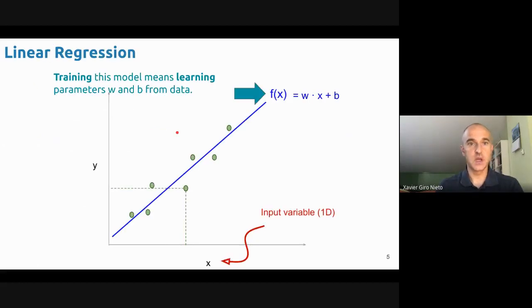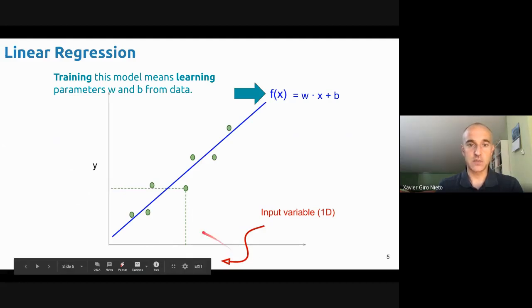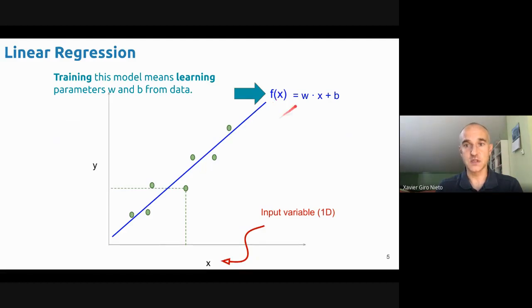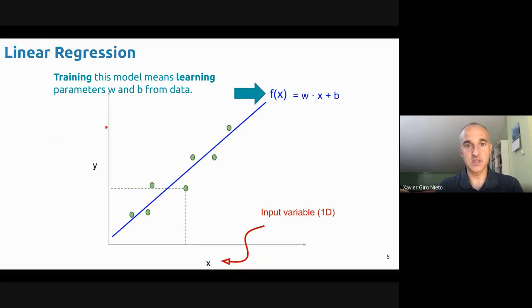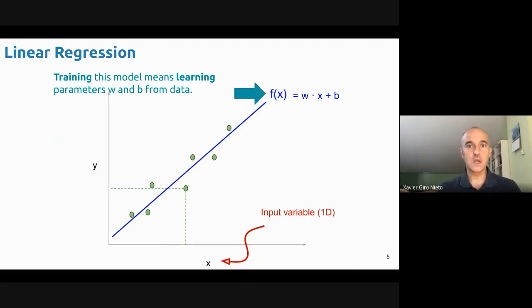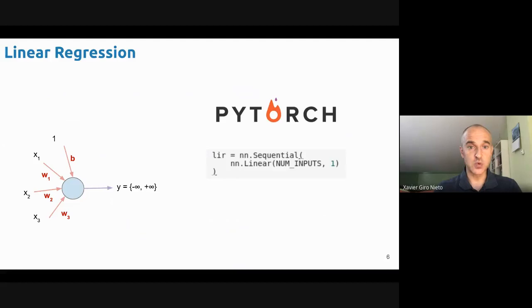Let's start with linear regression. As you saw in the previous lecture, linear regression is probably the most basic task in machine learning. We have some input variable — in this case 1D — and some training samples shown as points. What we want to do is estimate the parameters of a line: the slope and the bias, so that whenever we have any x value we can map it into predicted label y following a linear rule. Training this model means learning parameters w and b.